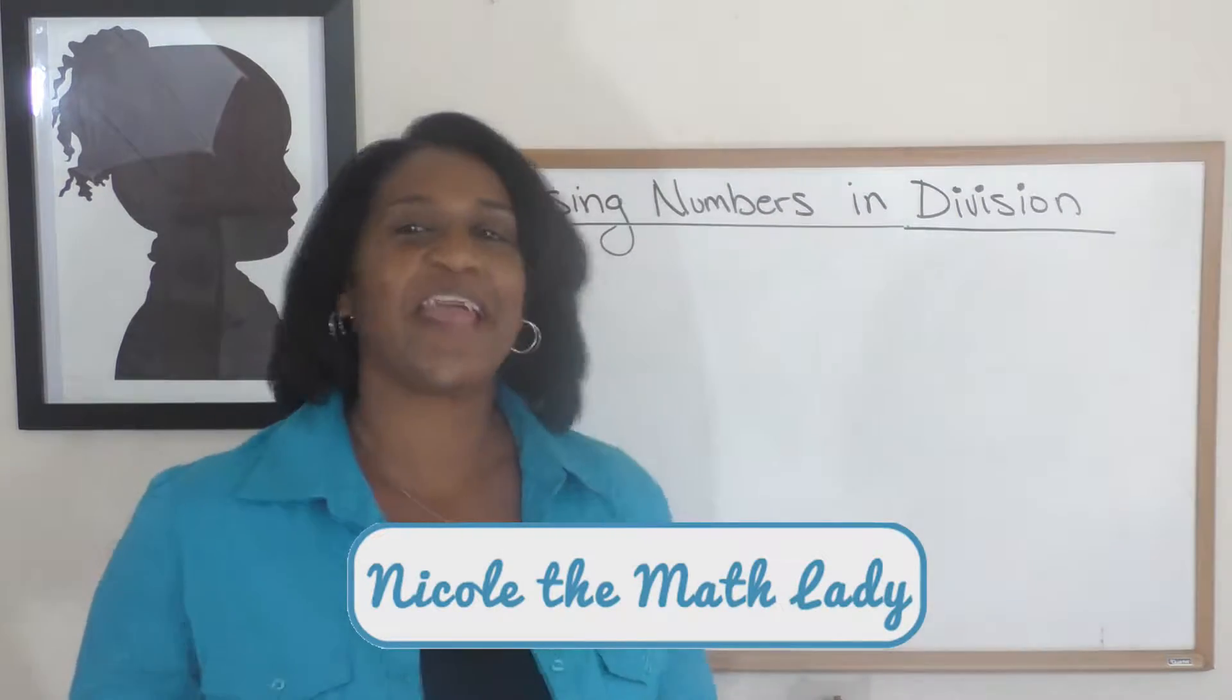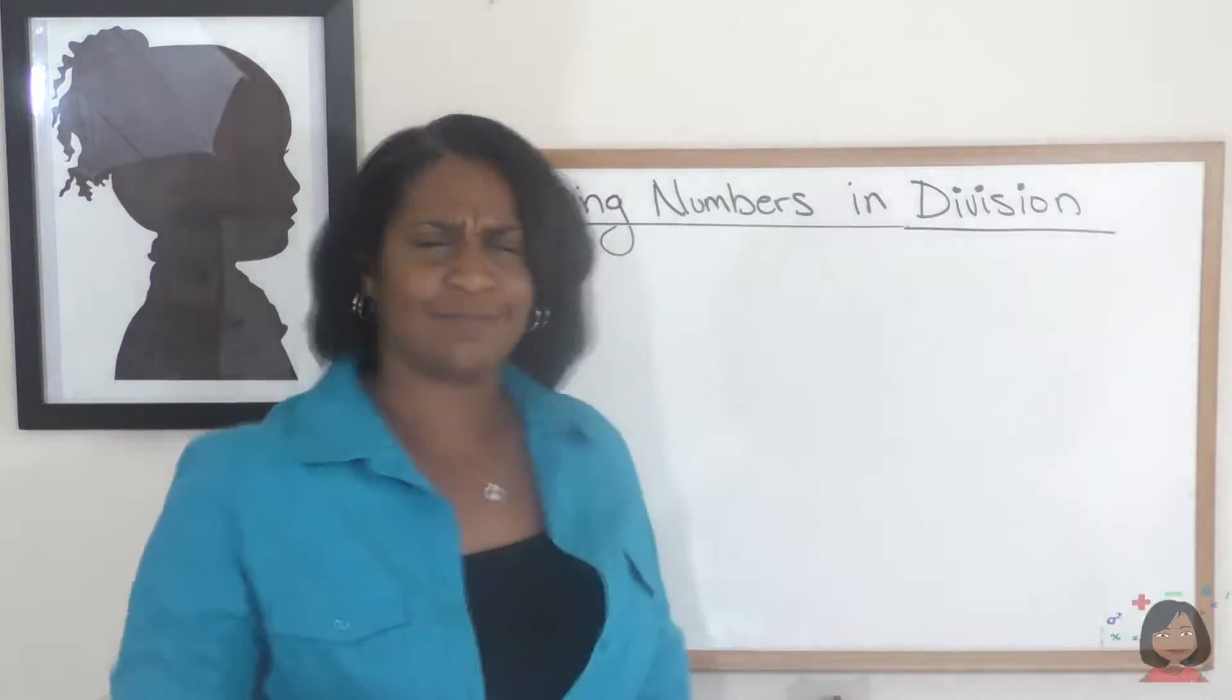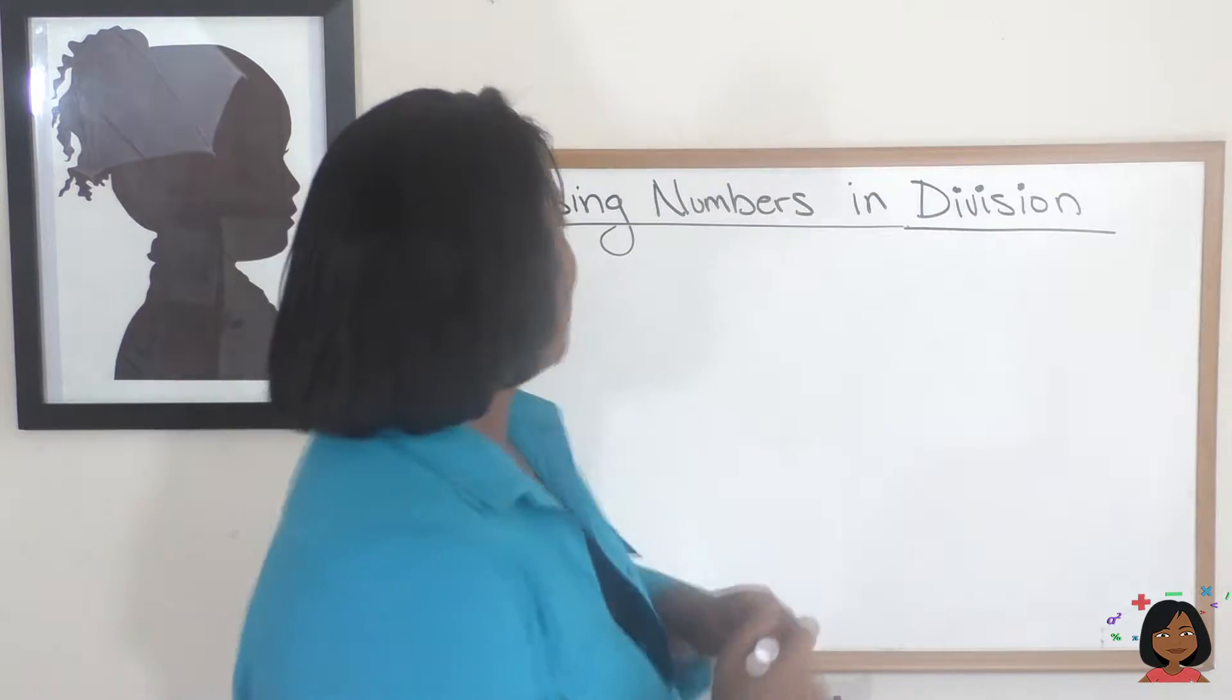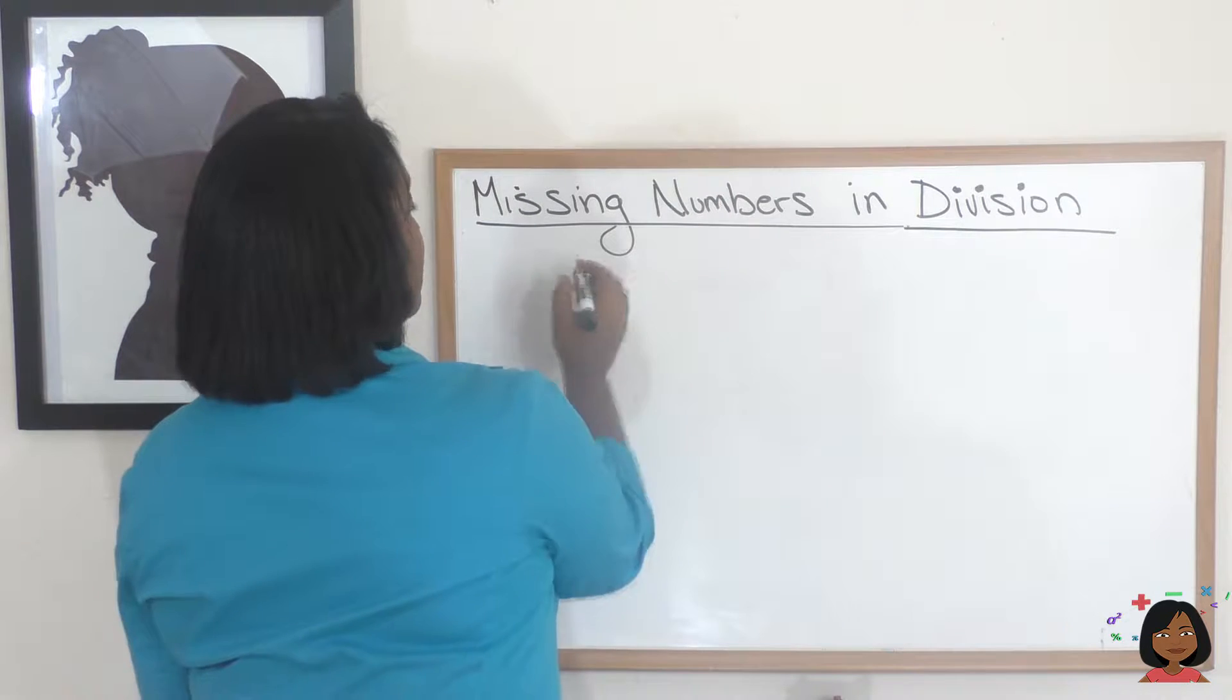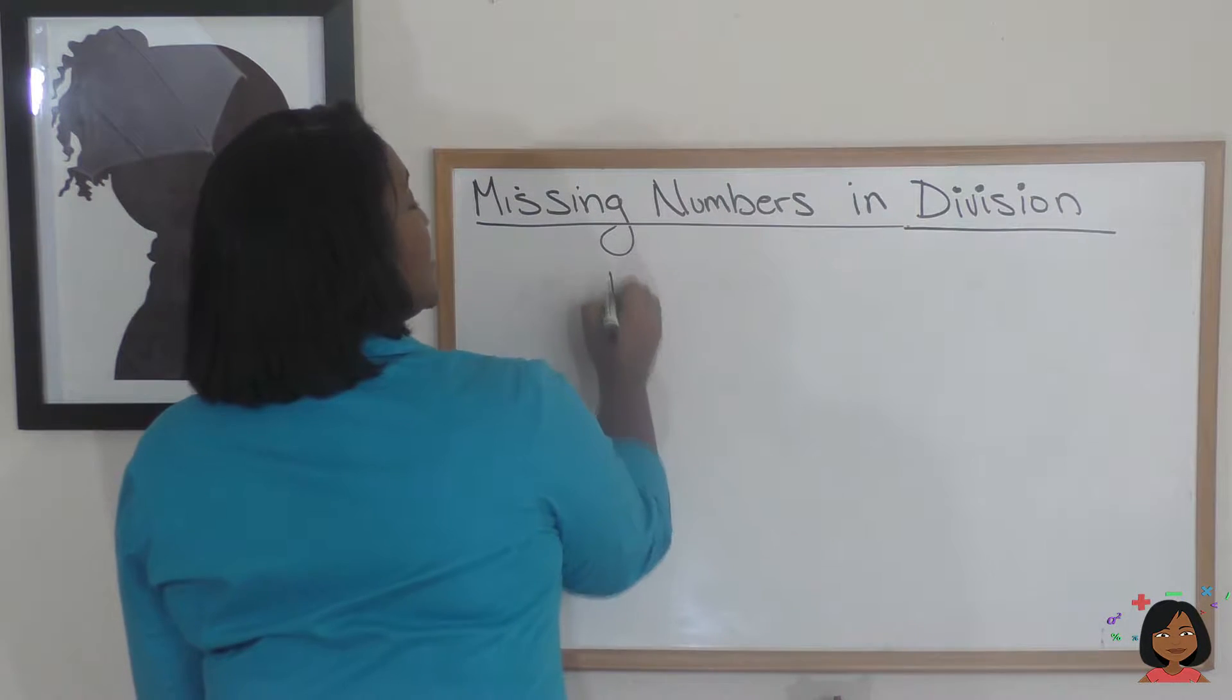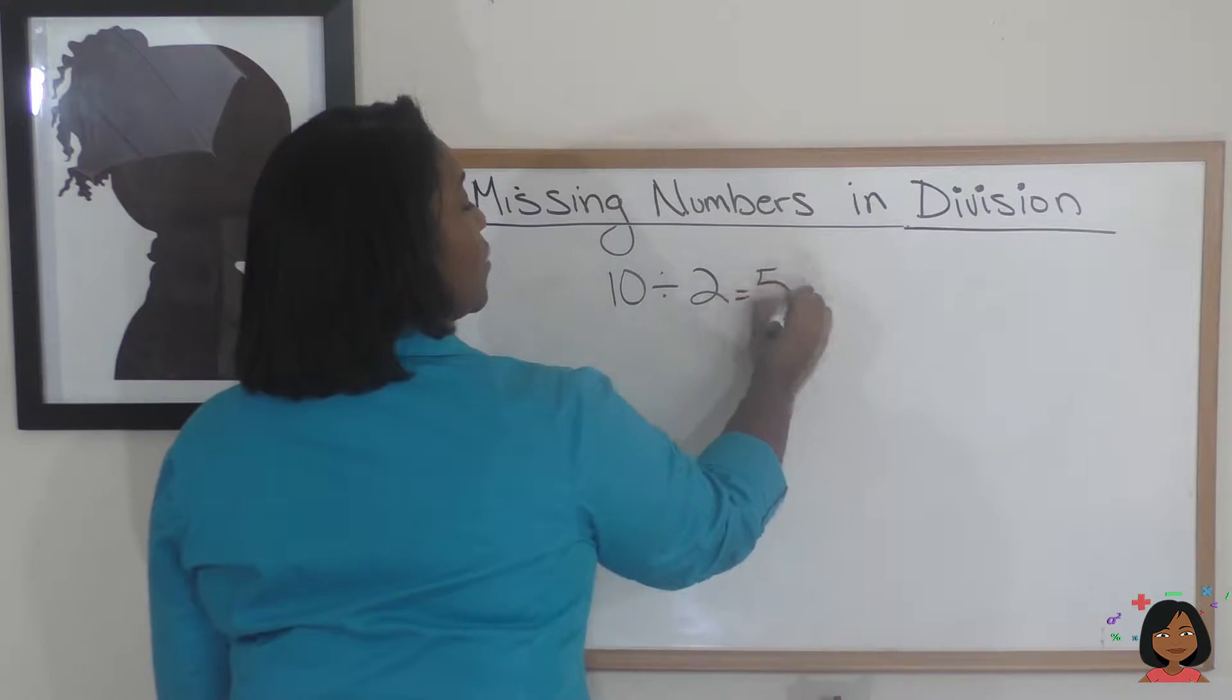Hi, it's Nicole the Math Lady, and we're here to find missing numbers in division. So how do we do that? Well, let's take a look. Let's say we have 10 divided by 2 equals 5.